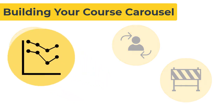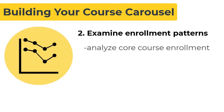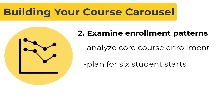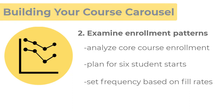Next, examine enrollment patterns over the past few years in similar programs for your college. What does enrollment in core courses look like from term to term? Remember that LSU Online allows for six starts per year with students taking two courses per term. This may mean that you need to increase the frequency of your required courses. Also, schedule frequency of courses based on your highest filling and under-filled courses.